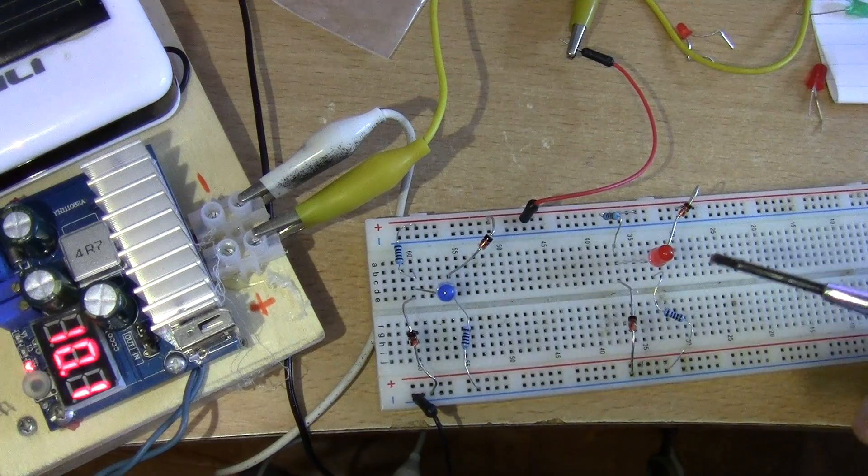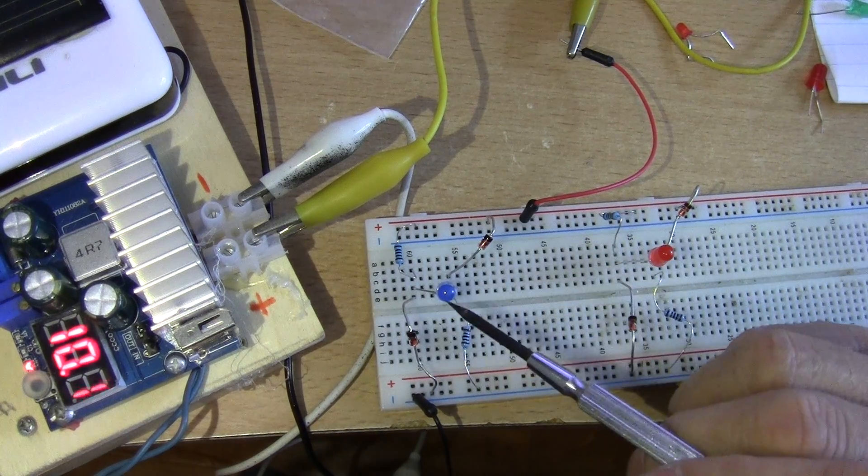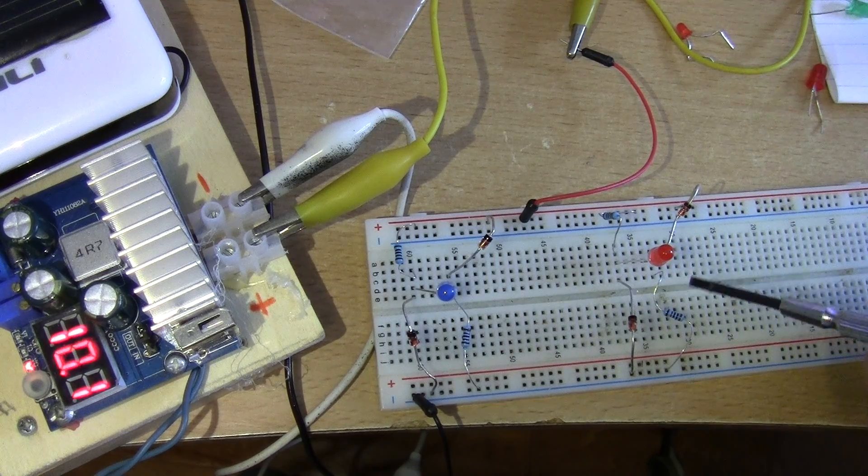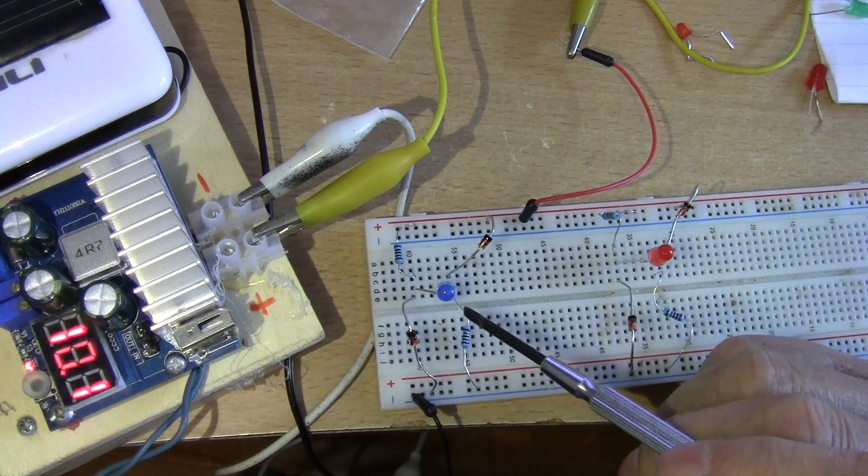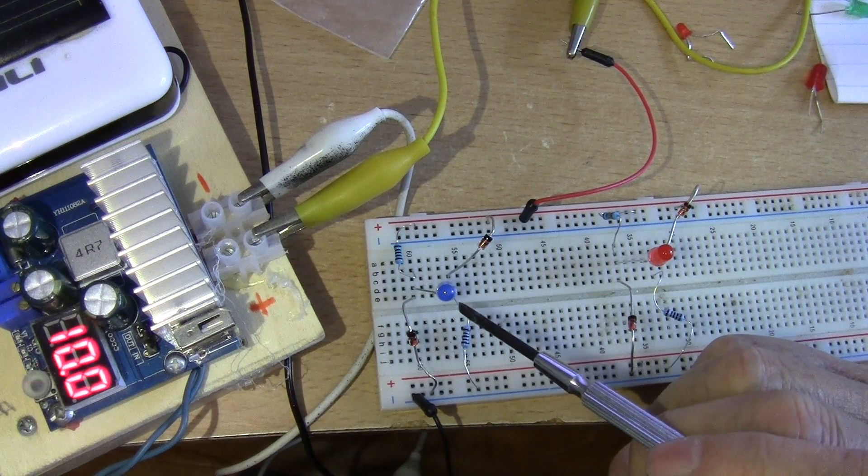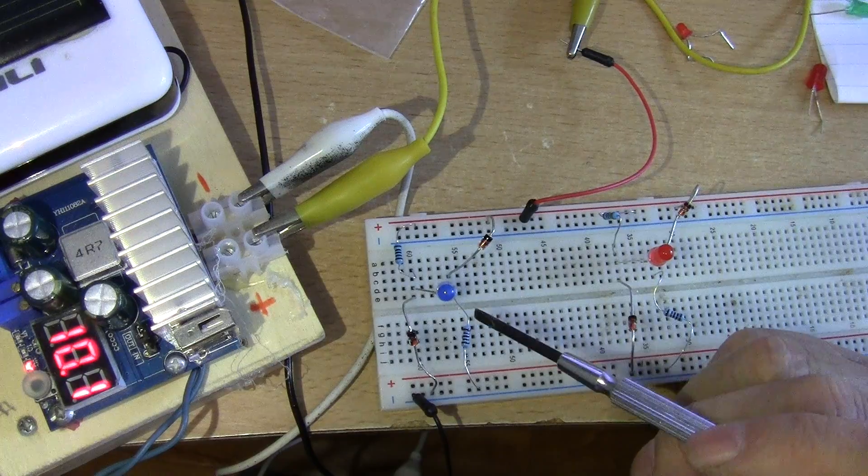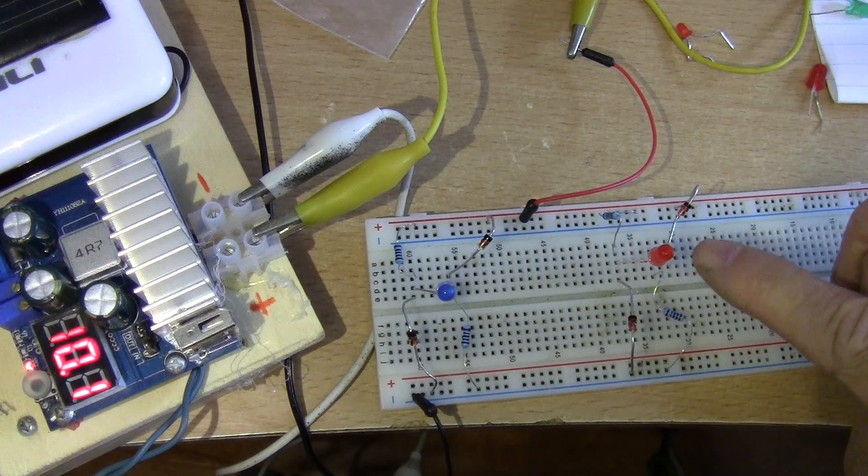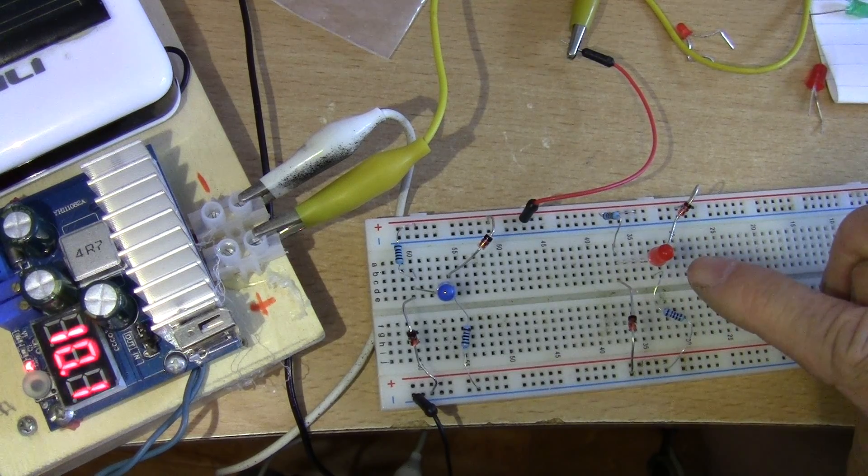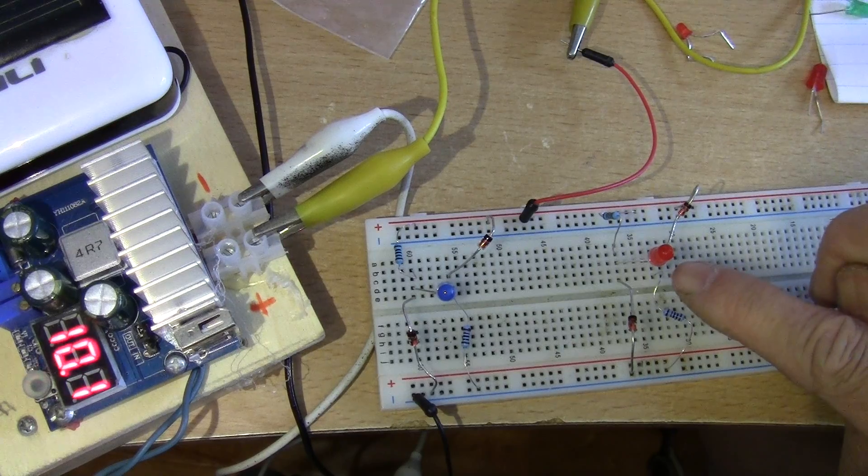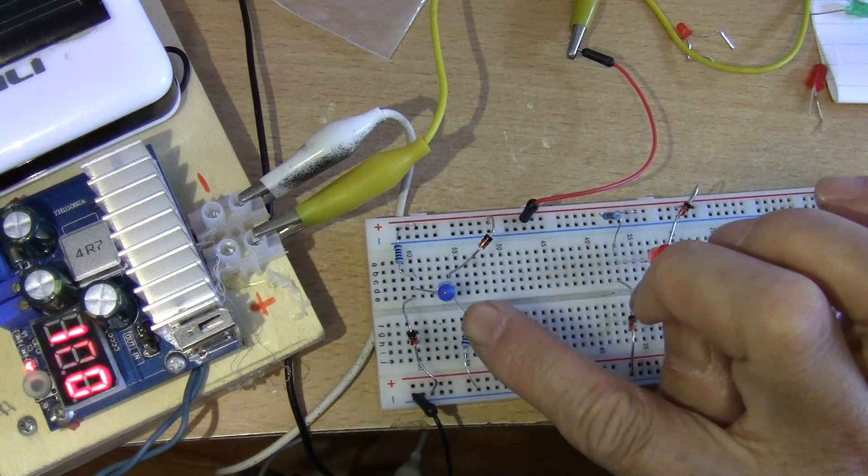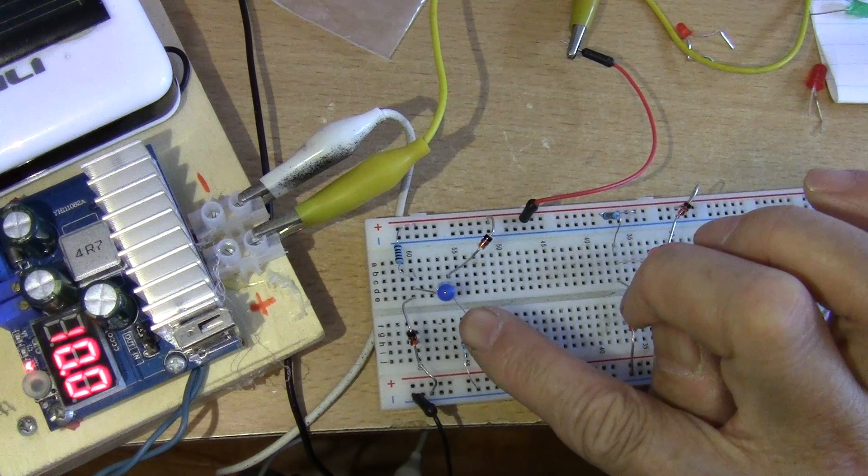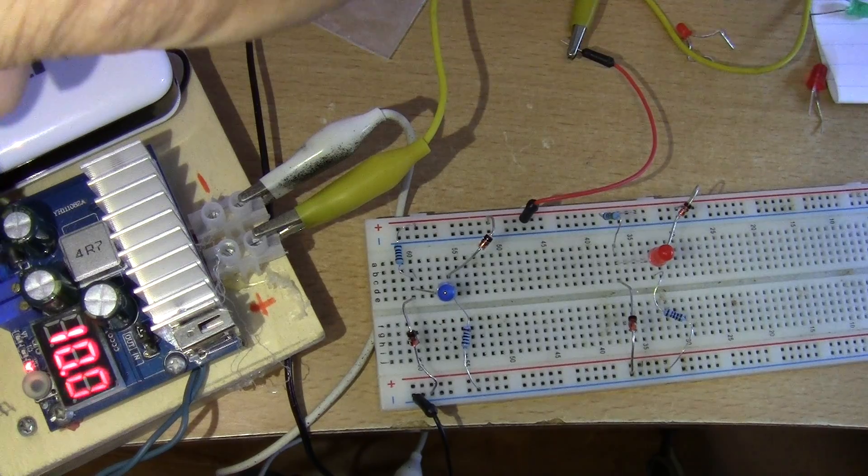So now I have the same setup here except the LED is different. This is a red LED turn on about 1.8V. And this is a blue LED turn on about 2.5V to 3.7V. So one would light at, this one would light at about 9.7V, 9.6V. So let's see the difference.